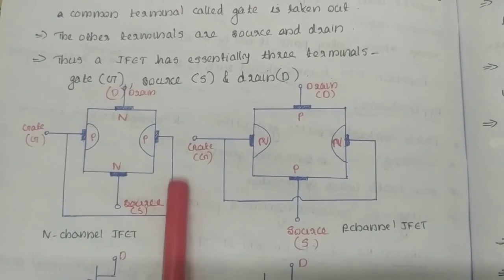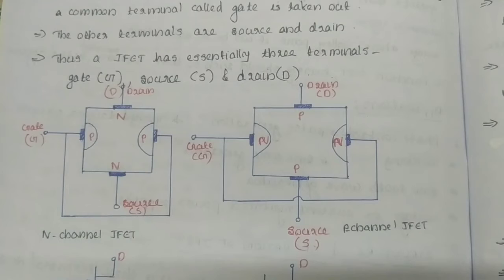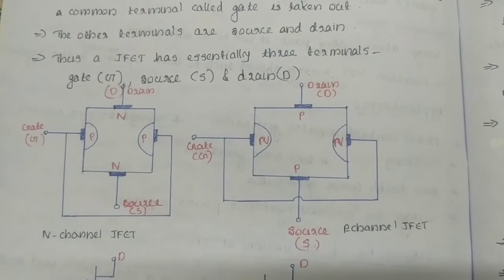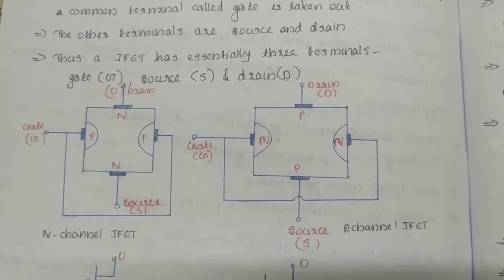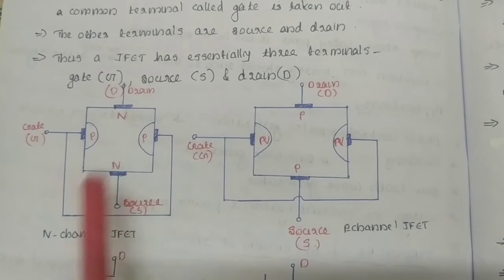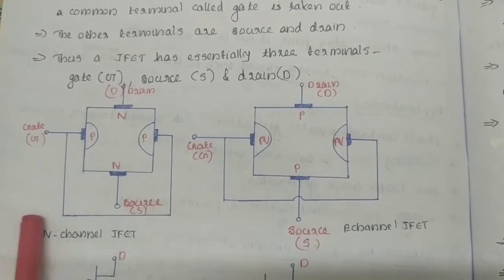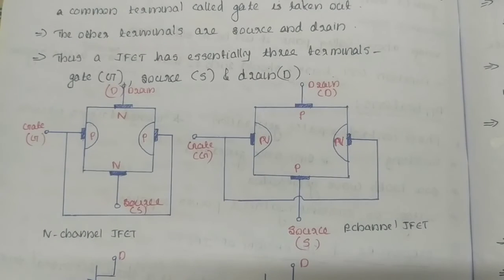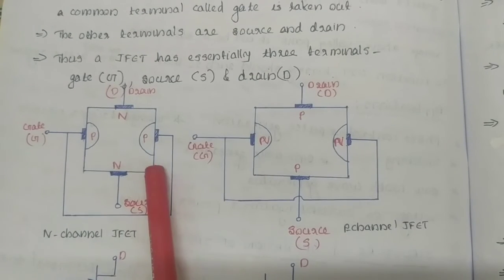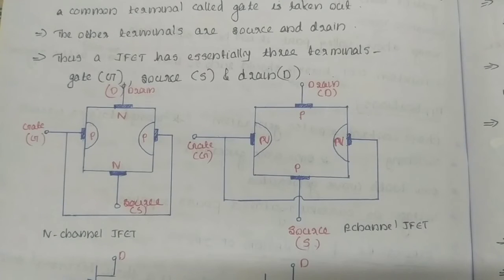During drain-to-source voltage, the voltage is applied to the channel and current flows. The channel current from source to drain is controlled by the gate-to-source voltage. This makes JFET a voltage-controlled device.